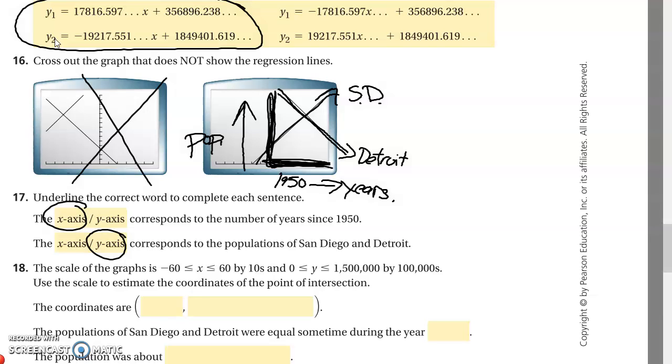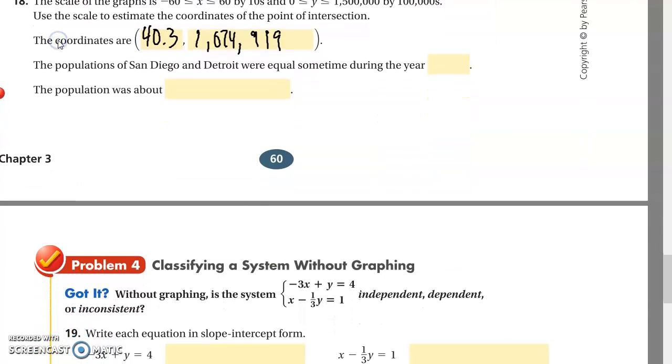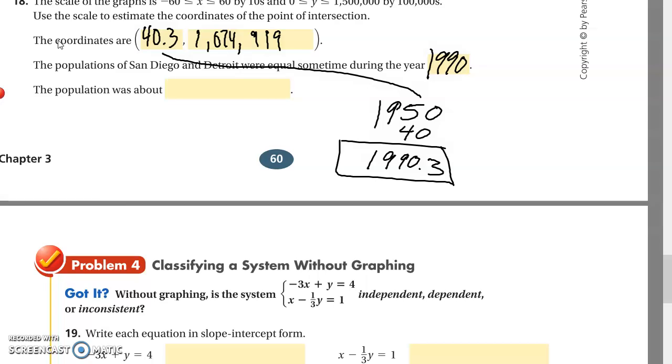18, the coordinates are what when they intersect? And this is just doing the data and the math. And I'm going to give you the answer for this one because we didn't do it all. We're going to say 1.074, 919. The populations of San Diego and Detroit were equal sometime during the year of what? 1990. And how do we know that? It's because the graph says 1950. Since 1950, you have to add this 40 to 1950. And you get 1990.3, actually. The population was about, and it says up here, about, you could put 107500. That's an about. I don't know why they picked this. I would just say a million.